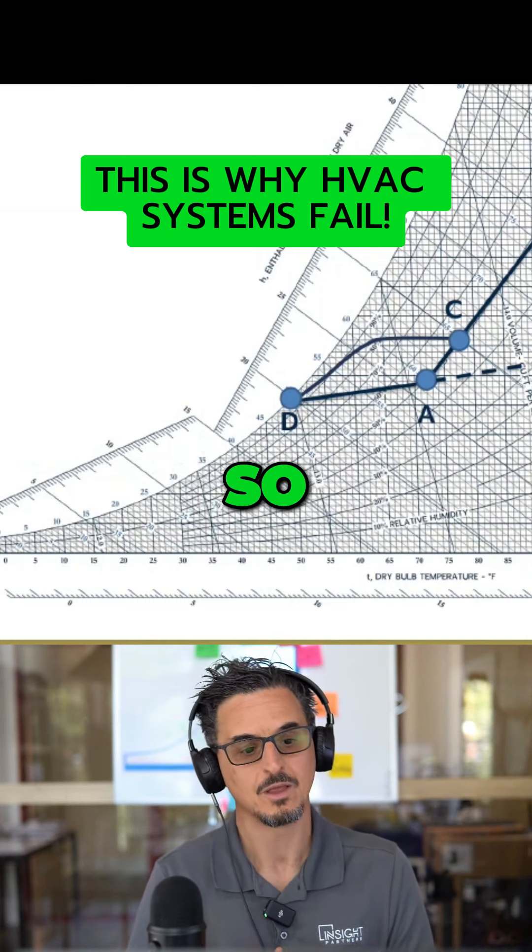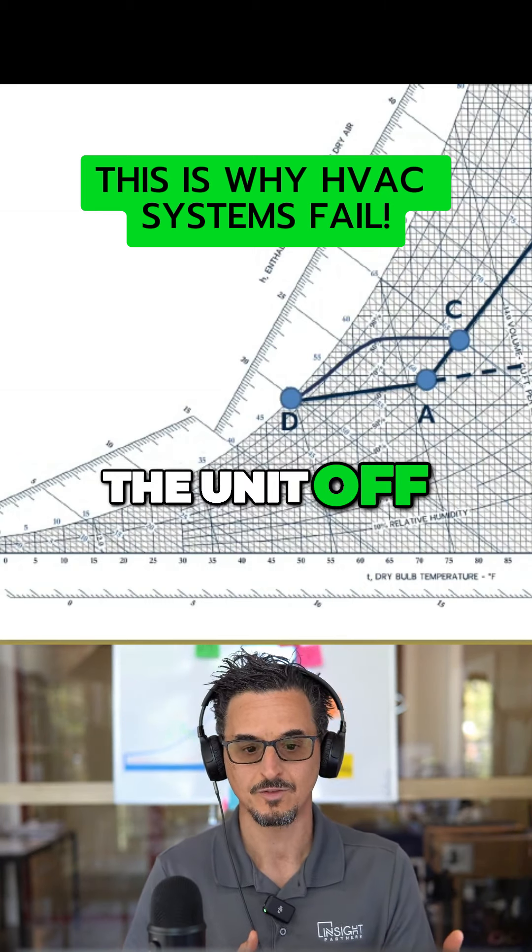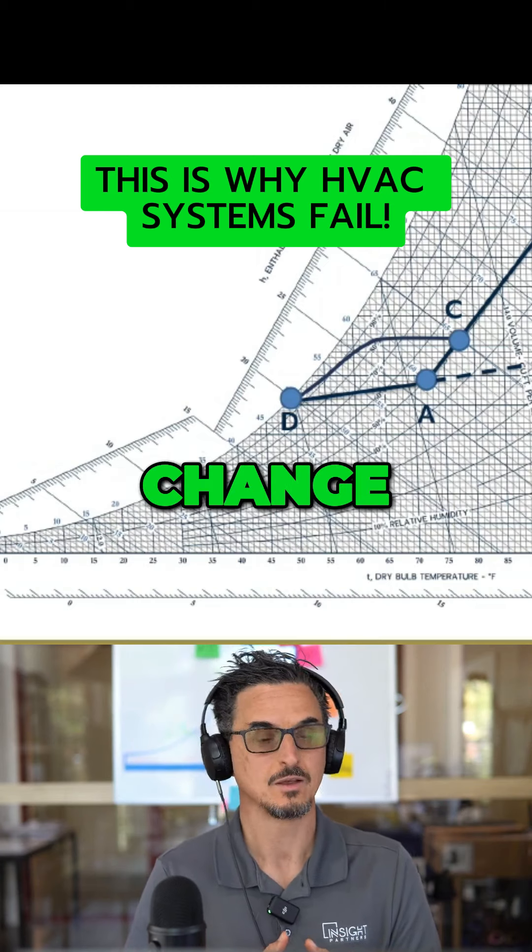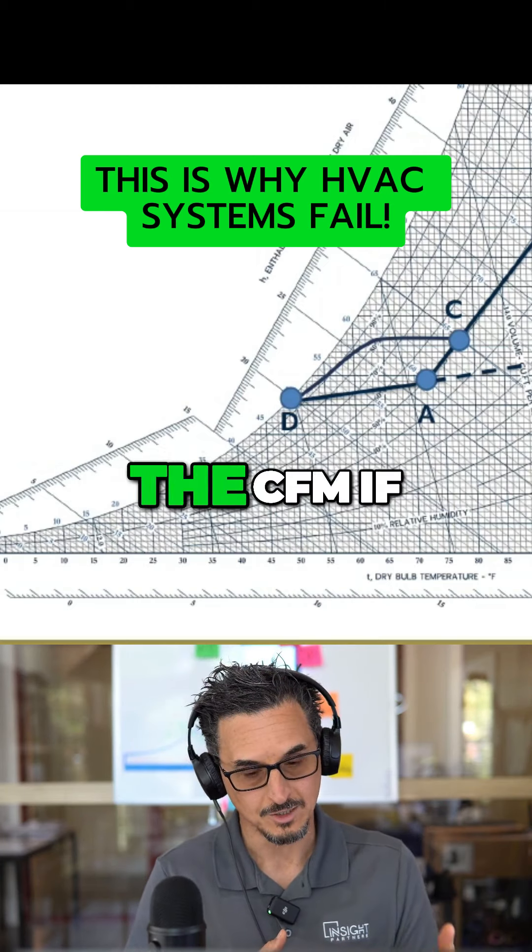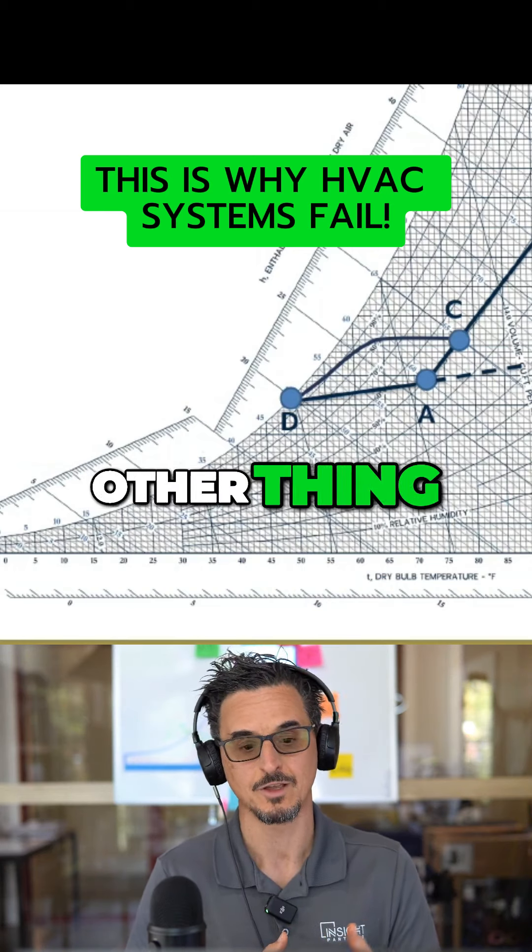So what are the options if it's a constant volume system? You can turn the unit off, which doesn't dehumidify very well. You can change the CFM if you have the ability to, if it's a constant volume unit.